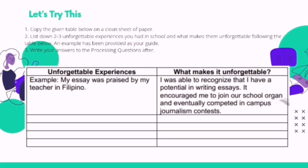Now, let's try this. Copy the given table below on a clean sheet of paper. List down 2 to 3 unforgettable experiences you had in school and what makes them unforgettable. An example has been provided as your guide, and then write your answers to the processing questions after. For example, unforgettable experience: 'My essay was praised by my teacher in Filipino.' What makes it unforgettable? I was able to recognize that I have a potential in writing essays. It encouraged me to join our school organ and eventually compete in a campus journalism contest.